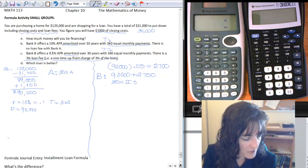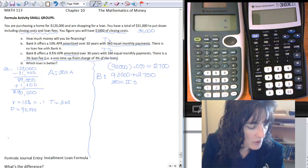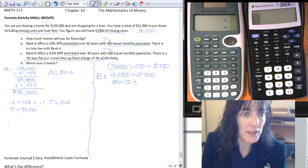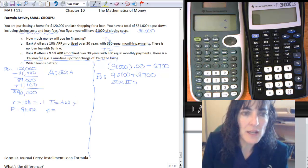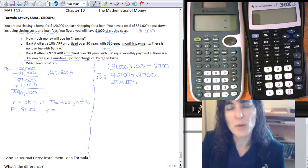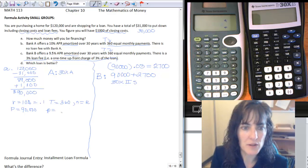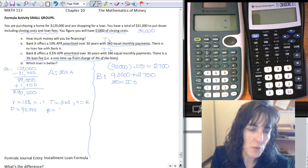So I need to find out my little p. And remember, little p is going to be R over N, and N is going to be 12. Because it's every month we're making payments, so it's monthly compounding, so 12 for my N. So 0.1 divided by 12.